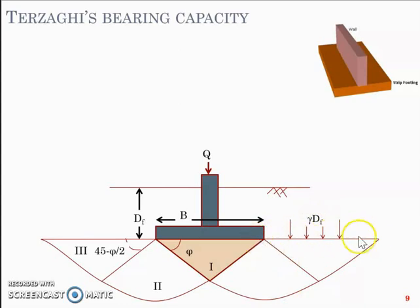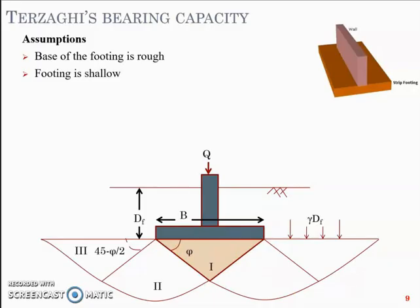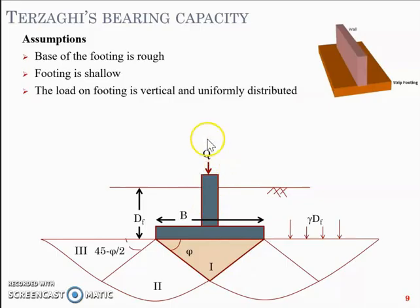In short, this is the foundation level. Above that you have the ground level. So the weight of the soil, the stress at the surface of the soil in the region of Df depth, is equal to gamma into Df. So that has to be acting on this level on zone three. Now the assumptions proposed by Terzaghi include: the base of the footing is rough, which means the footing is not smooth, there will be angle of interface friction. The footing is shallow, which means Df is less than B. The load on the footing is vertical and uniformly distributed.